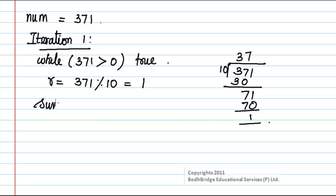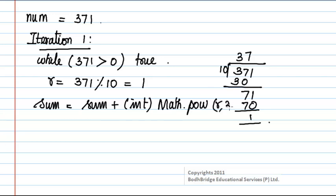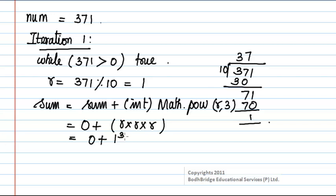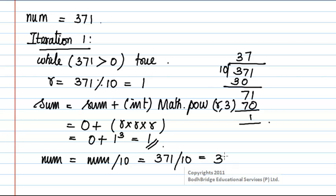The statement sum = sum + (int) Math.pow(remainder, 3) is executed. The value of sum, initialized to 0, is added with Math.pow(r, 3), which performs r × r × r. So that is 0 plus 1 cubed, which equals 1. Next, number = number / 10: 371 divided by 10 gives a quotient of 37.